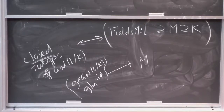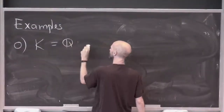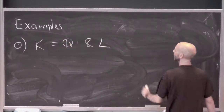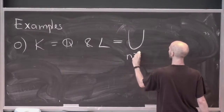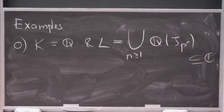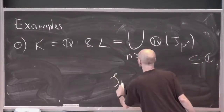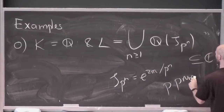Let's do some examples. I'm really interested in local fields, but before that let me do finite fields, and before that one we mentioned already. Example zero: let K = Q, and let L be the union for n ≥ 1 of Q(ζ_{p^n}), where ζ_{p^n} = e^{2πi/p^n} for a prime p. So these are cyclotomic fields.